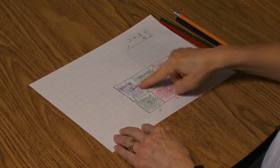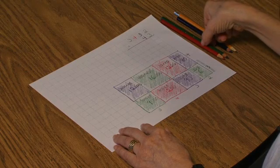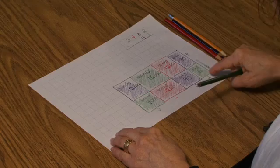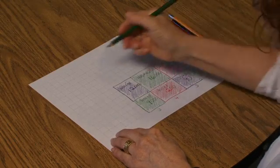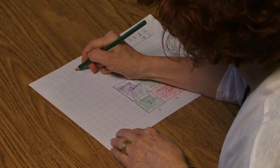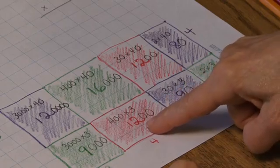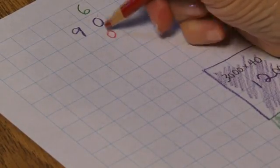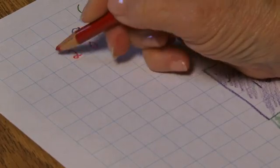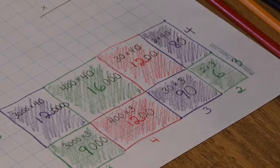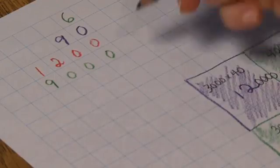So now I'm going to take all of these parts of this product and record them so that I can find my final answer. Starting with 6 units, 9 tens or 90, 12 hundreds, 9 thousands.